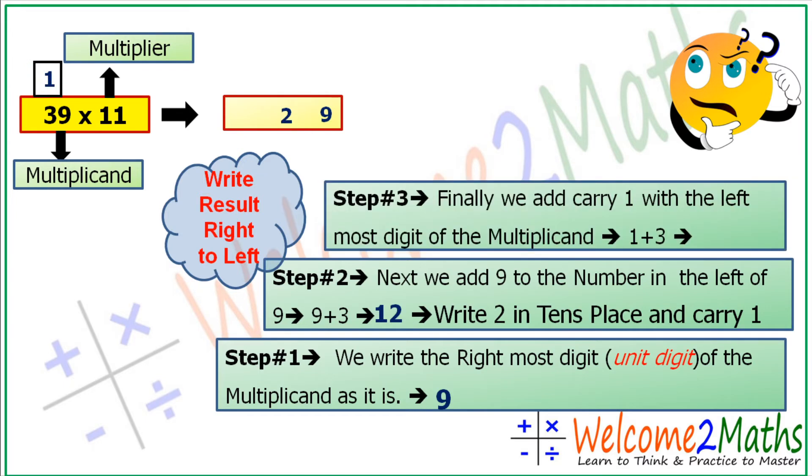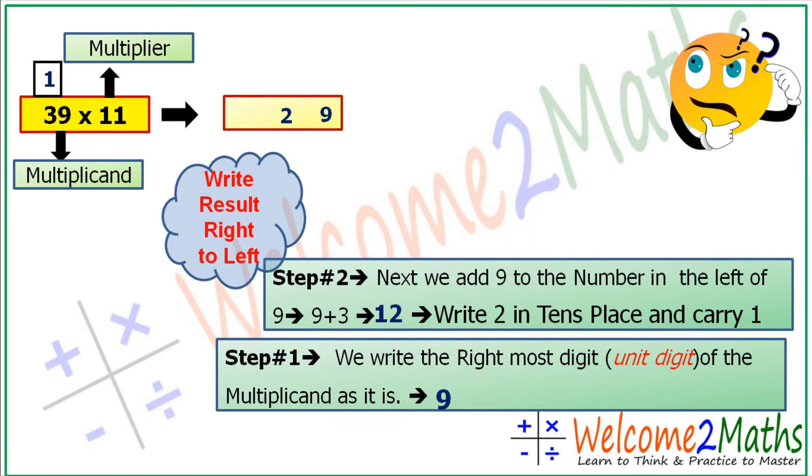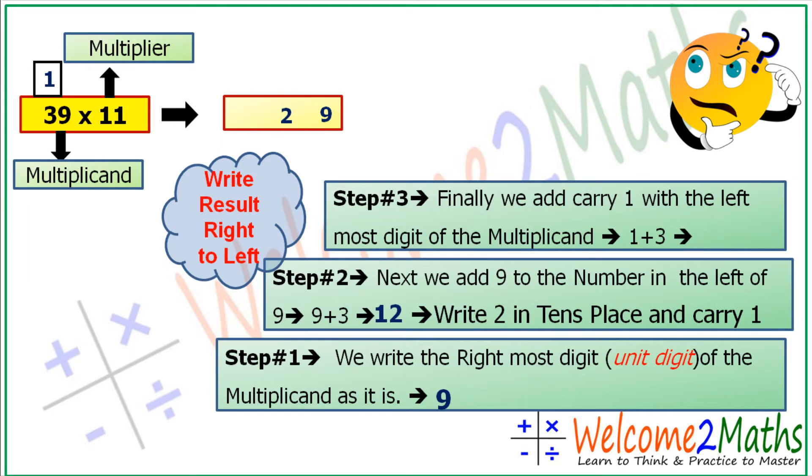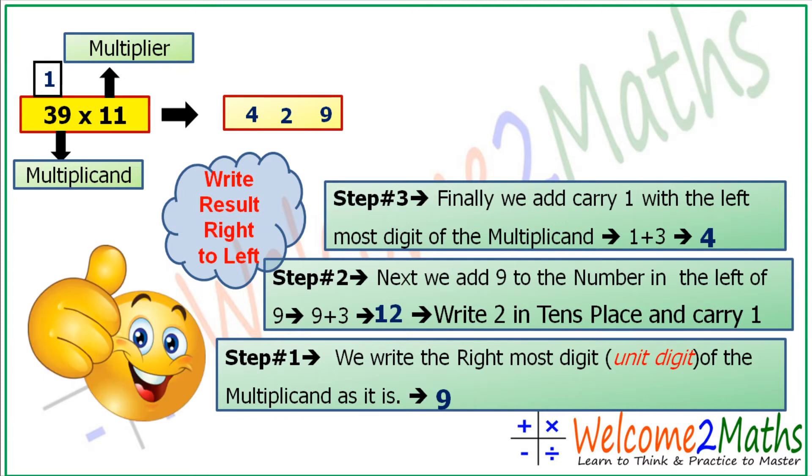See step 3. Step 3 is: finally we add the carry with the leftmost digit of the multiplicand. That is 1 plus 3 and we get 4. So let's write 4 in the answer box. We solved the question: 429 is our answer. So let's do some more examples.